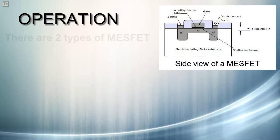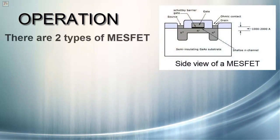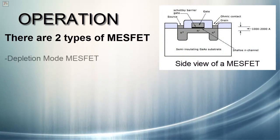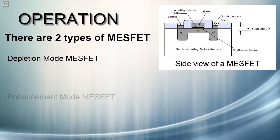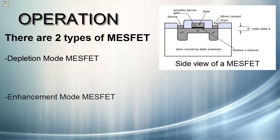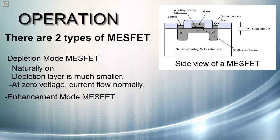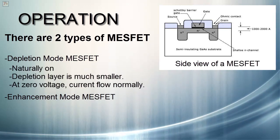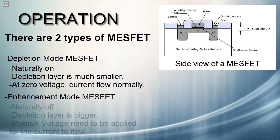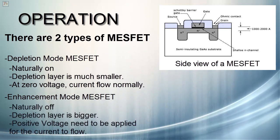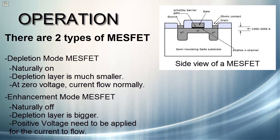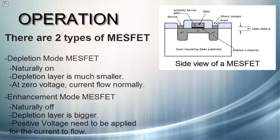There are two types of MESFETs: depletion mode MESFETs, which are naturally on, and enhancement mode MESFETs, which are naturally off. In a depletion mode MESFET, the depletion layer is much smaller, so current can normally flow when the gate voltage is zero. An enhancement mode MESFET has a large depletion layer when the voltage across the gate is zero; therefore, a positive voltage must be applied to the gate for current to flow.